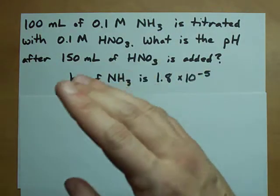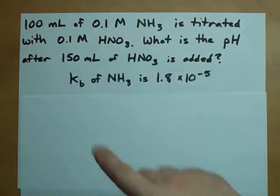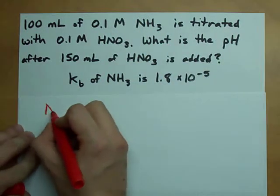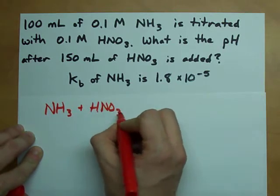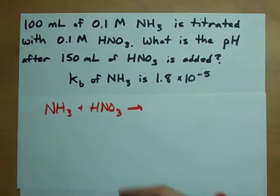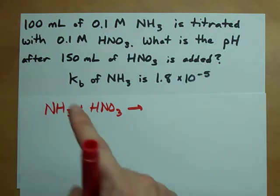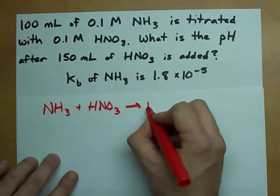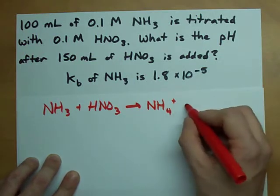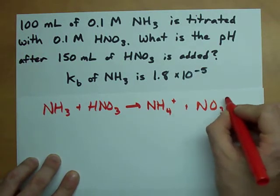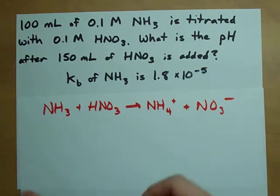Okay, when I'm asked to do a titration problem, here's what I do. Number one, balanced chemical equation. I am mixing ammonia with HNO3. What happens when I mix those two? Acid plus base. Well, the base steals the proton away and leaves back the conjugate base of the acid.